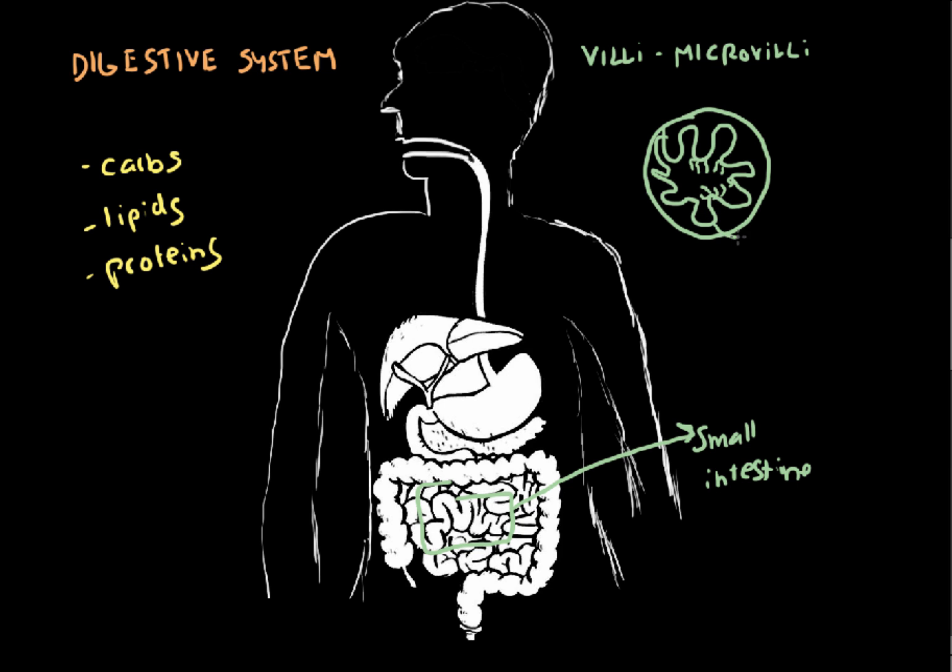So a single one of these is called a villus, so this over here, this is a villus, one of the bigger finger-like projections. And then this little hair-like structure on top of the villus, this is microvillus.